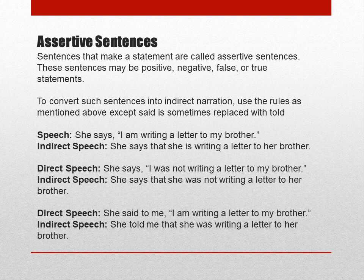For example: Direct — 'She says, I am writing a letter to my brother.' In indirect speech, 'says' remains as it is because it is in present tense; tenses do not change. Indirect — 'She says that she is writing a letter to her brother.' Second example: Direct — 'She says, I was not writing a letter to my brother.' Indirect — 'She says that she was not writing a letter to her brother.' Like this, sentences change; you can follow the examples.